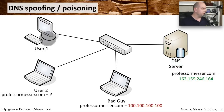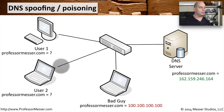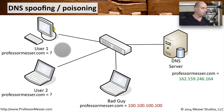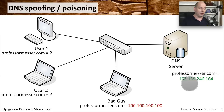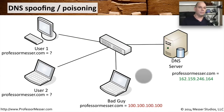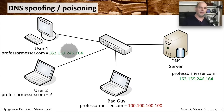Here's how this might happen. We've got two users, user 1 and user 2, and we've got a DNS server and the bad guy sitting in the middle. User 1 is going to want to query for ProfessorMesser.com. He needs an IP address of that particular web server, so he sends a DNS request to the DNS server. The DNS server has the correct address of 162.159.246.164, and it sends that response back to the client. The client, upon getting that response, performs the normal communication to the ProfessorMesser.com server using that correct IP address.